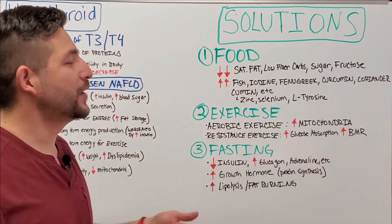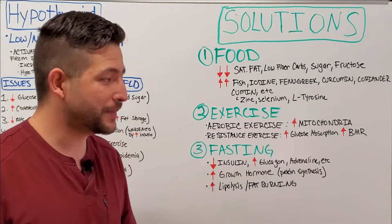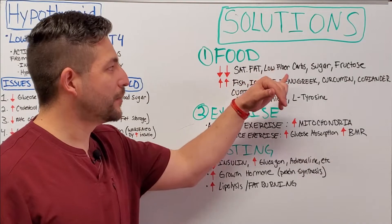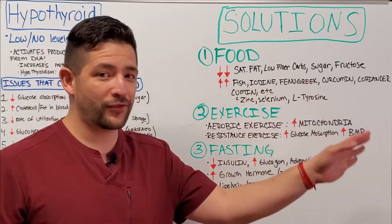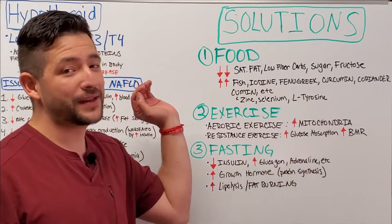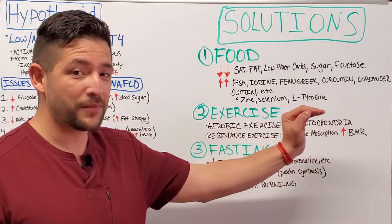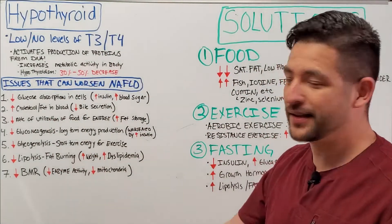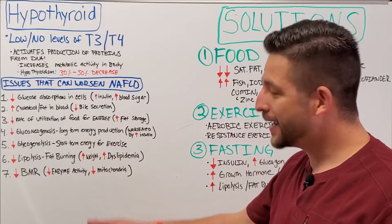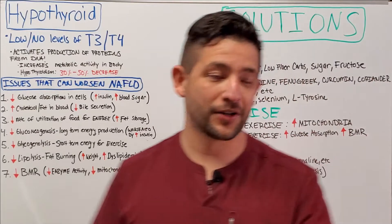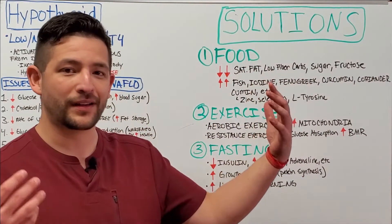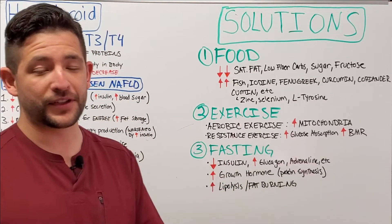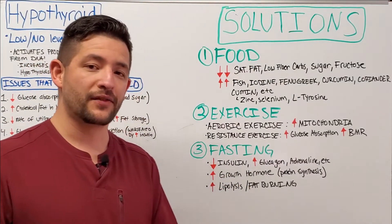You definitely want to limit, if not completely eliminate, large amounts of saturated fat, low-fiber carbohydrates like rice and pasta, sugar, and fructose. In my opinion, you should completely eliminate these from your diet, because all of these nutrients will worsen literally every single point discussed — every issue is negatively impacted by eating large amounts of these low-quality foods.